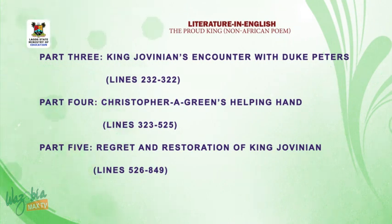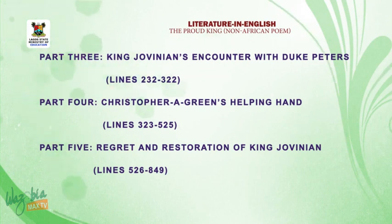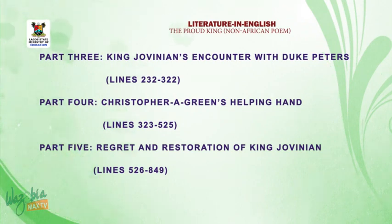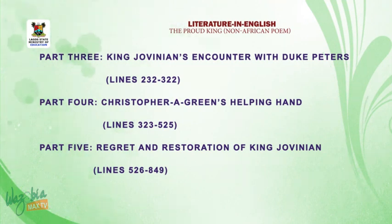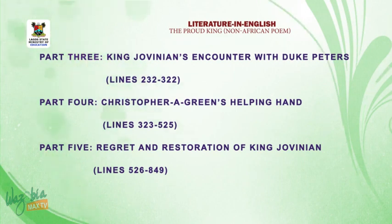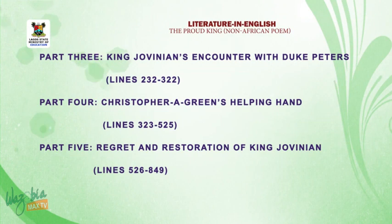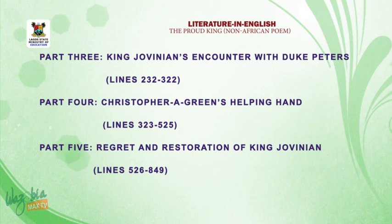Part five is titled Regret and Restoration of King Jovnian. After being driven out of his palace, he wandered into the forest and came to a place called Amit, where he met a priest. He introduced himself as the ruling king, and the priest initially rejected him. But he regretted his actions and confessed to the Almighty God. The priest prayed for him, sympathized with him, gave him food and befitting clothing. He went back to his palace and was recognized and celebrated.